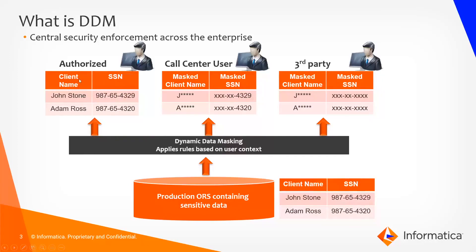When an authorized user logs into E360, the DDM, which is sitting on top of MDM, should make sure the entire SSN is visible to the authorized user. Whereas when a call center user logs into E360, DDM should make sure only the last four digits of the SSN number are visible. And when a third-party user logs into E360, none of the SSN number values should be visible.